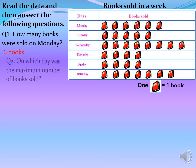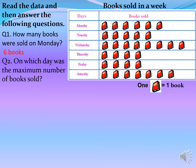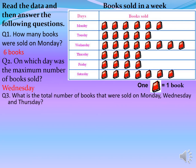On which day was the maximum number of books sold? Going back to our pictograph, we can see that on Wednesday the maximum number of books were sold. What is the total number of books sold on Monday, Wednesday, and Thursday? On Monday, six books; Wednesday, eight books; and Thursday, four books. Adding them all together, six plus eight plus four equals 18 books.